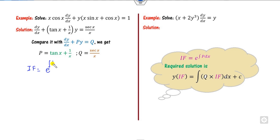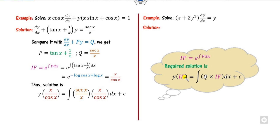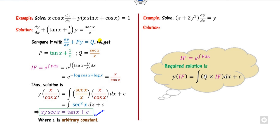From the equation, find dy/dx; make the coefficient 1 by dividing both sides by x·cos(x). Now identify p and q. The integrating factor is e raised to the power of the integral of (tan x + 1/x) dx. The integral of tan x is minus log cos x, and the integral of 1/x is log x. Taking the log of x divided by cos x, e to that power gives x/cos x as the integrating factor. Substituting into the solution formula, x/cos x simplifies using 1/cos x = sec x, and the integral of sec²x is tan x. So the required solution is y·(x/cos x) = tan x + c.